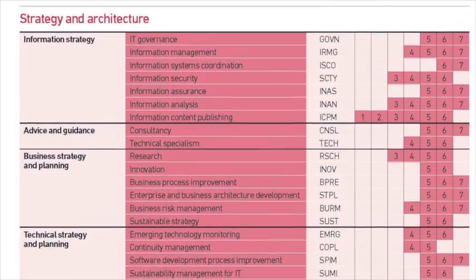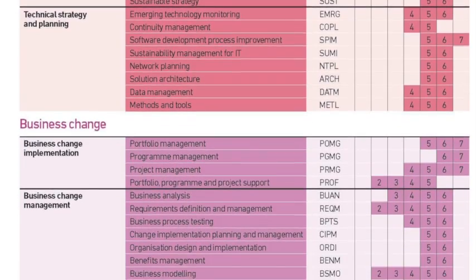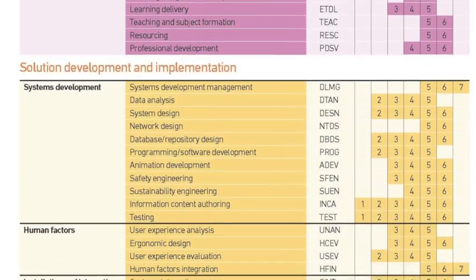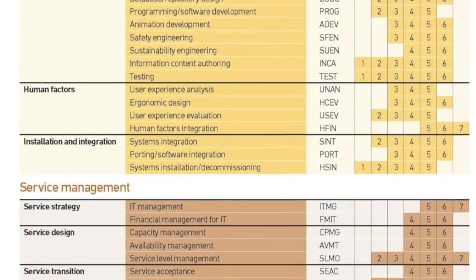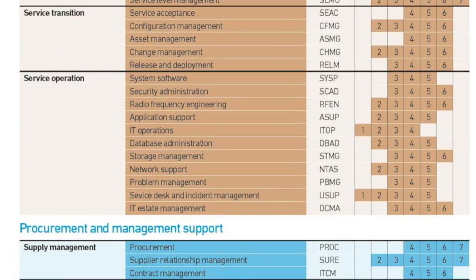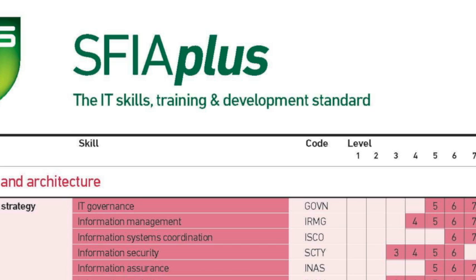The framework is designed to recognise pretty much every skill that exists in the IT industry. As you can see from the top, it covers such things like strategy and architecture, and it even moves further down into areas like client interface, supply relationship management, and even sales and marketing. Across the top, you can see levels ranging from 1 to 7, for different levels of autonomy, influence, complexity, and business skills — all content found within the SFIA framework.